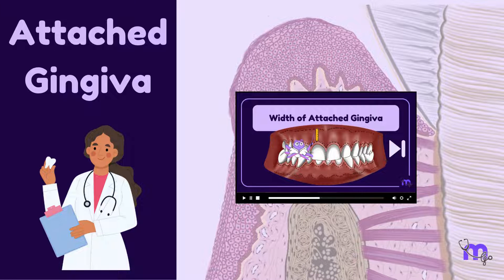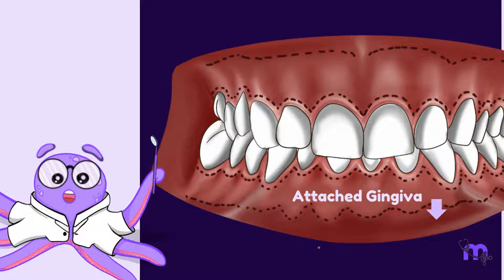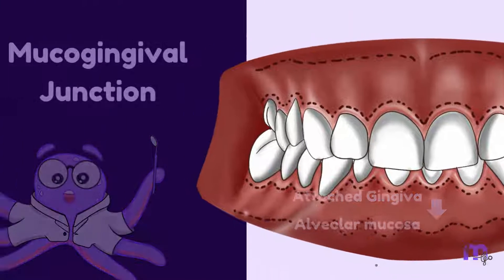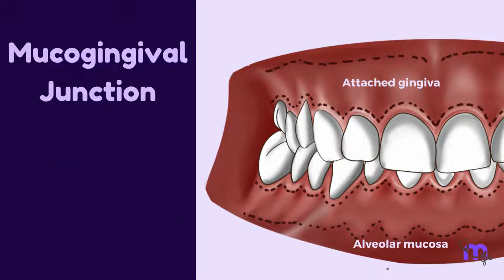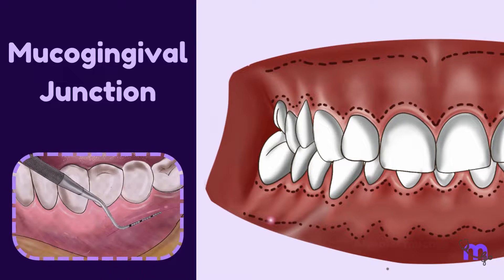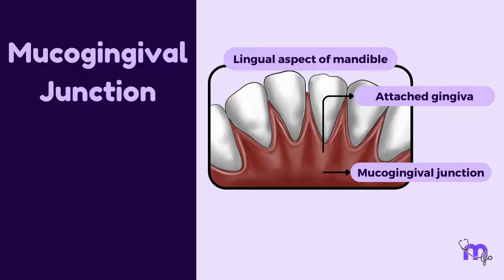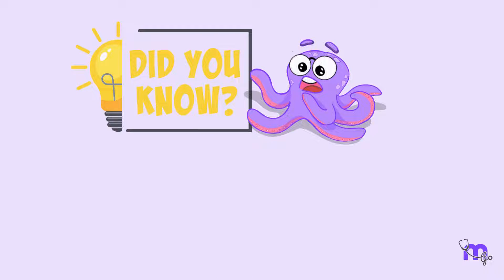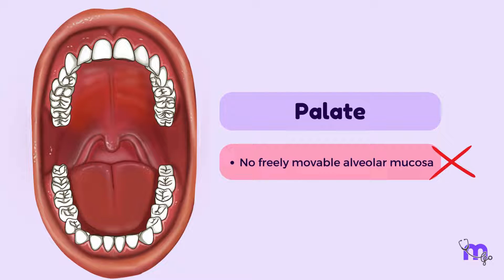Apical to the attached GENGIVA lies the ALVEOLAR MUCOSA. The junction between the freely movable and fragile alveolar mucosa and the firm attached GENGIVA is called the mucogingival junction. This junction is movable and is usually constant throughout life. In the lingual aspect of the mandible, the mucogingival junction is formed at the junction between the attached GENGIVA and the movable lingual mucosa at the floor of the mouth. However, the palate does not have a mucogingival junction, as it does not contain freely movable alveolar mucosa.